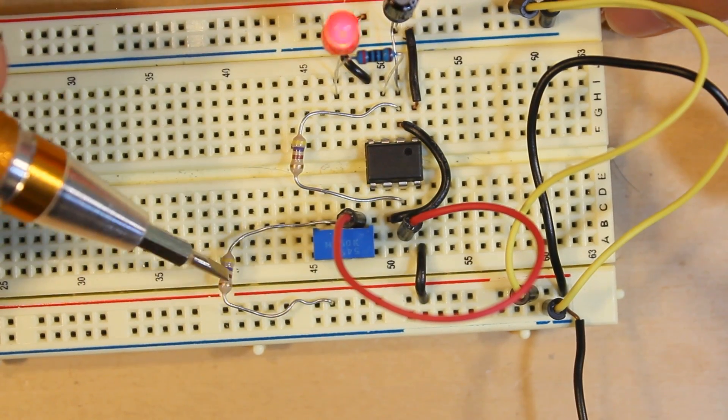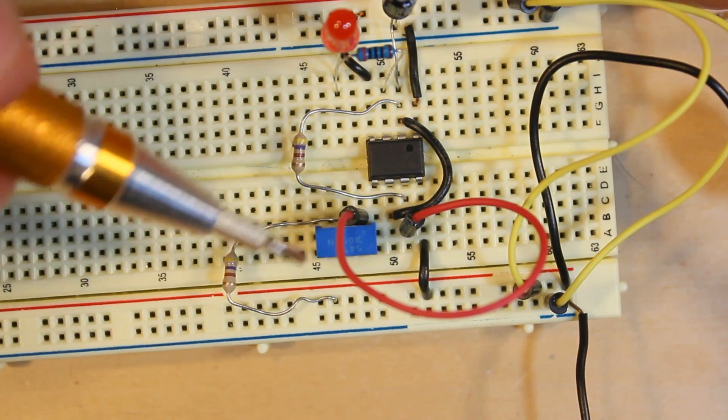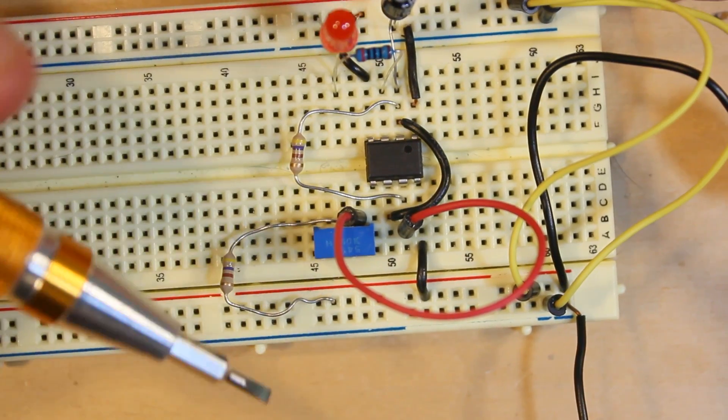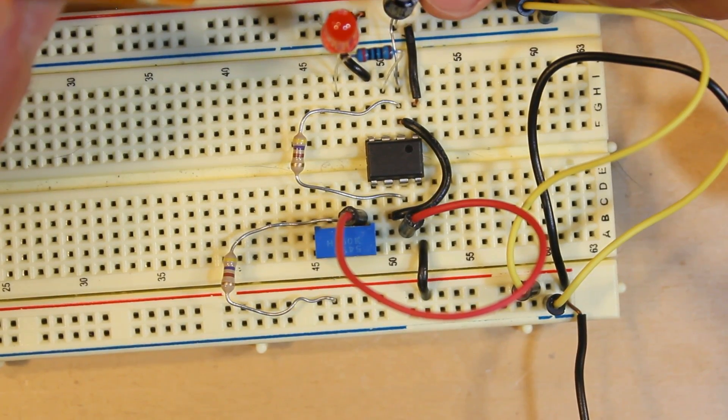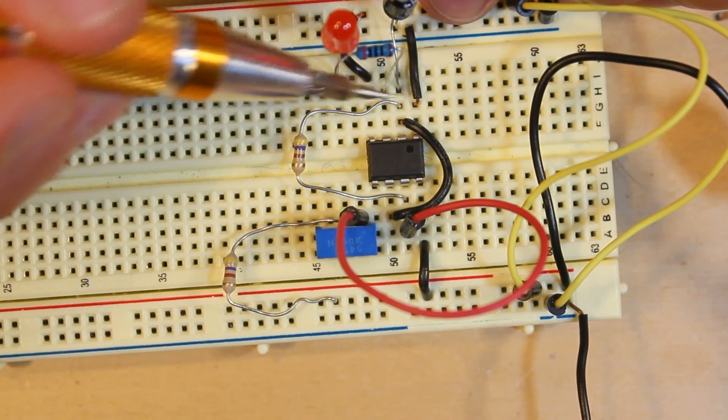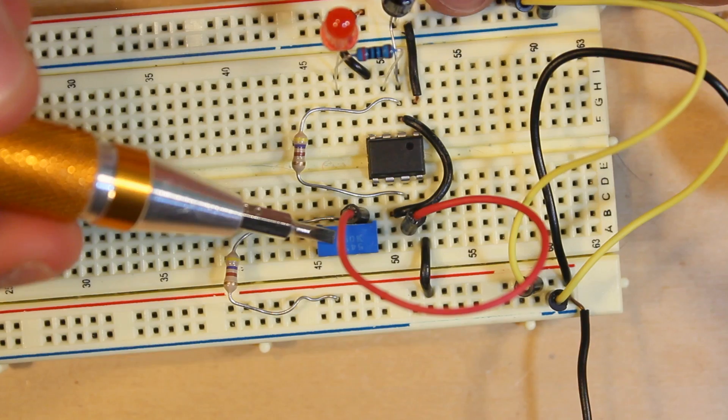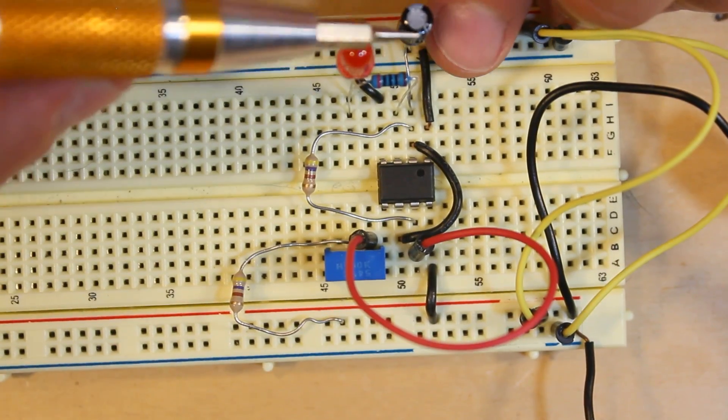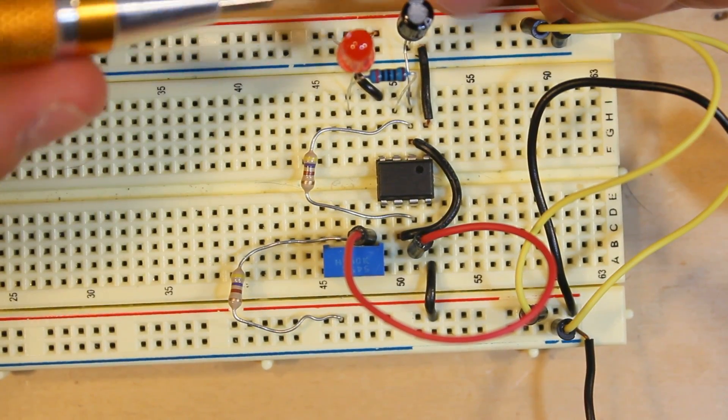What this resistor and this potentiometer do is, since they're linked in series, we can just call them one resistor. What this resistor does is it charges the capacitor using this resistor to do so. Increasing the resistance of this makes it take longer for the capacitor to charge, which makes it take longer for the LED to turn back on once it's turned off.